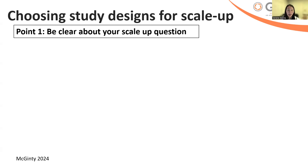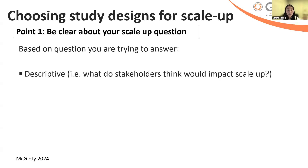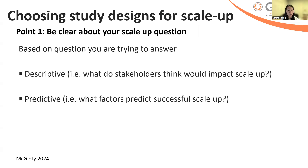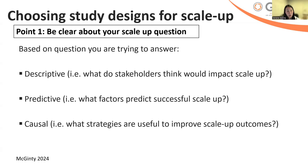McGinty and colleagues provide a really useful guide for thinking about questions and study designs. Briefly, your questions might be a descriptive one, where you're looking to describe perceptions or available resources for scale-up. You might be interested in predictive or association questions — what factors might predict or influence successful scale-up. Or are you interested in causal questions — typically evidence of efficacy or effectiveness when looking at what strategies are useful to improve outcomes. Really defining this question is so important so that you're not employing study designs that are inappropriate or may not be needed.